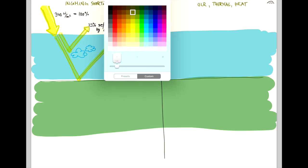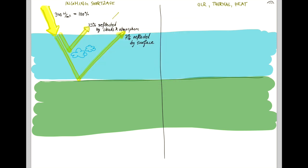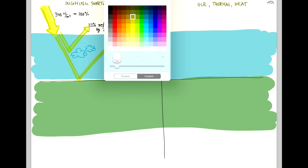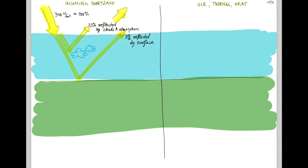So in total, we have 30% of our incoming solar radiation straight away reflected by the atmosphere, clouds, and surface. That is the 30% I was talking about in the last video.